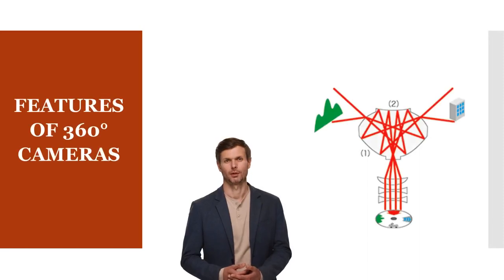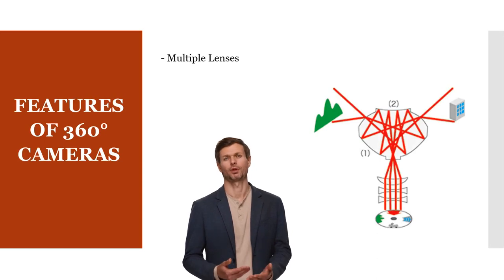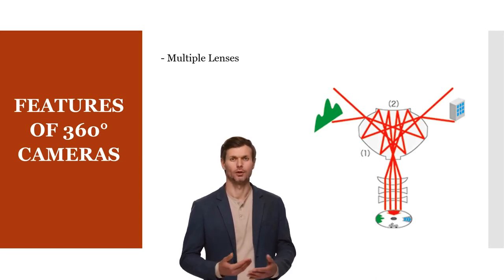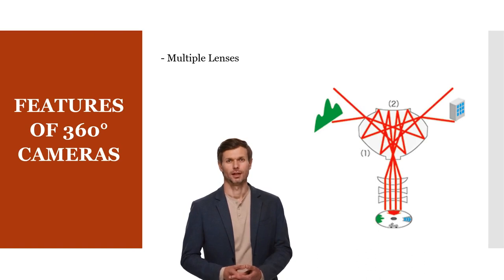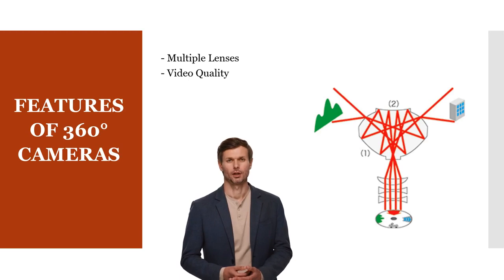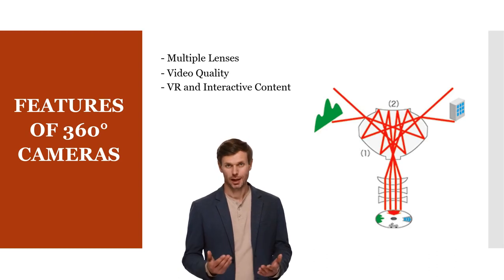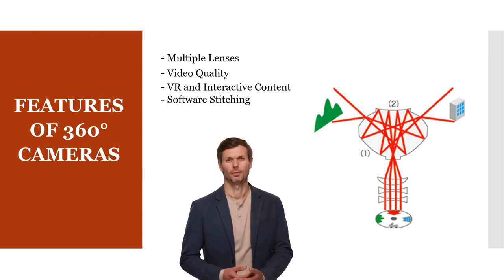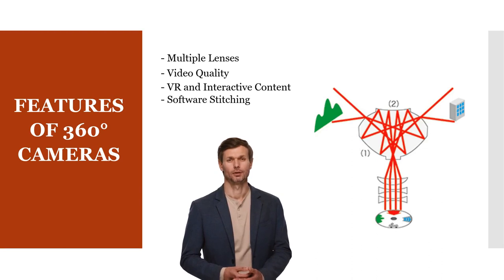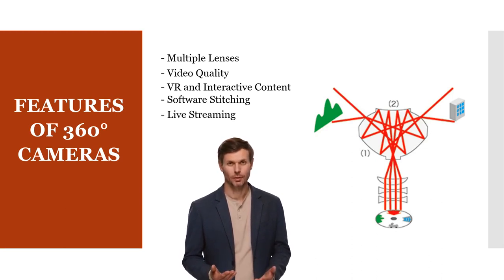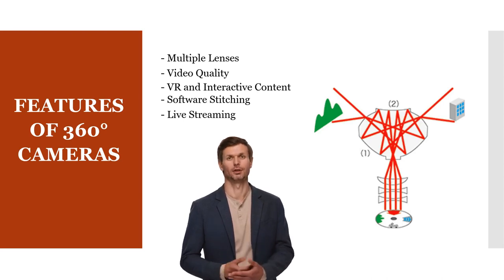Key 360-degree camera features include: First, multiple lenses — 360-degree cameras use multiple lenses to capture a panoramic view, and the images from these lenses are stitched together to create a seamless 360-degree video. Video quality — these cameras typically offer high-resolution recording, often in 4K or higher, to maintain image quality across the entire field of view. VR and interactive content — they are used to create immersive content for VR headsets, online platforms, and virtual tours. Software stitching combines footage from multiple lenses. Some 360-degree cameras also offer live streaming capabilities for real-time broadcast.